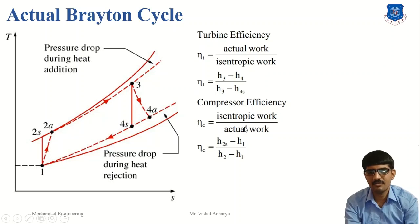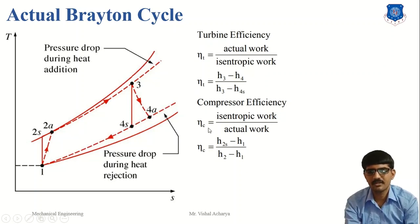Similarly, compressor efficiency is the isentropic work divided by the actual work, because here we require work input, not output. So we have the ratio of isentropic work to actual work. Isentropic work is H2s minus H1, and actual work is H2 minus H1. So H2 minus H1 requires more work compared to H2s minus H1. Compressor efficiency is also less than 100%. These losses occur because the compression and expansion processes are not truly isentropic due to friction losses.